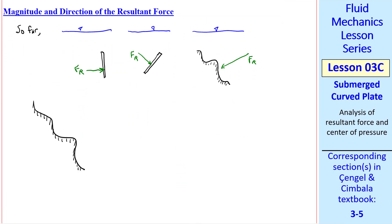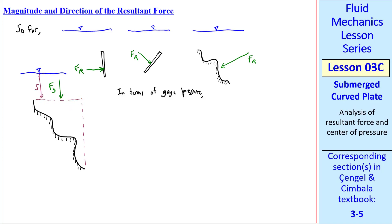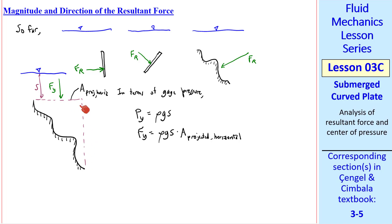If this is our surface, our curved plate, let's project the areas of this plate horizontally and vertically. If we know the distance from the surface of the water to the plate, we can easily calculate the net pressure force acting on this projected area. Namely, in terms of gauge pressure, the pressure on this face is just rho·g·s, and force Fy is that pressure times the projected horizontal area. For the vertical projected area, we do the same analysis as in a previous lesson, and we know how to calculate this net resultant force, Fh.